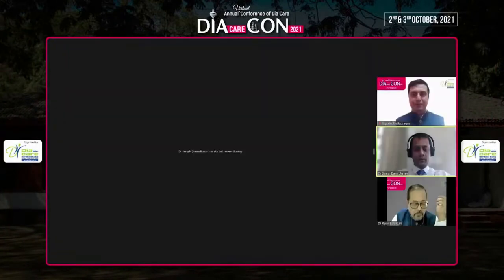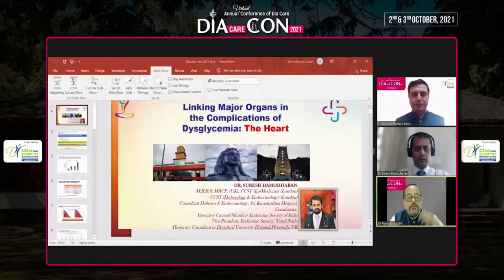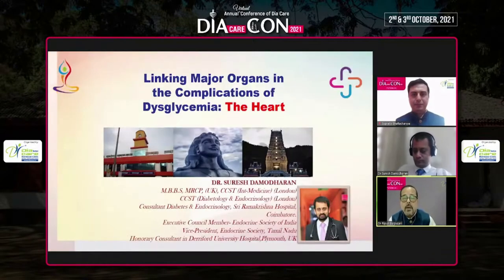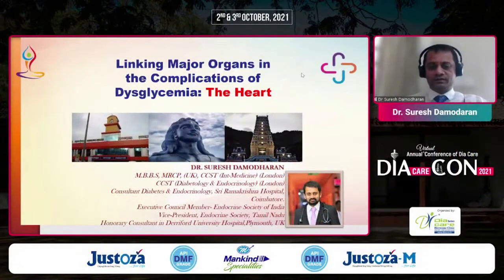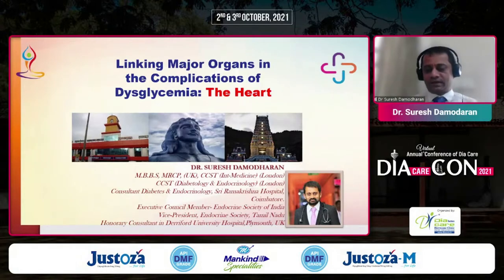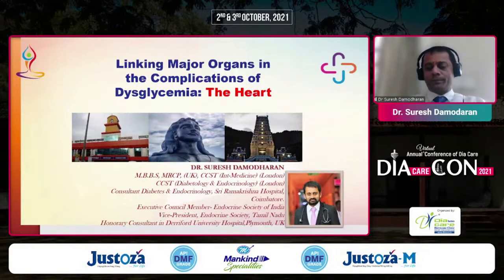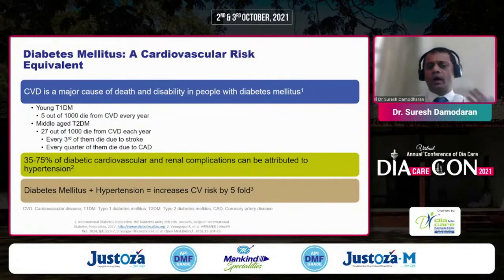Good morning, everyone. In the next eight or nine minutes, I'll focus on linking the major organs in the complications of dysglycemia, dealing with the heart today — liver has been covered and kidney will be covered soon. We know diabetes itself is a cardiovascular risk and a major cause of death in diabetes mellitus, even in type 1s. But diabetes with hypertension, the risk is almost fivefold.